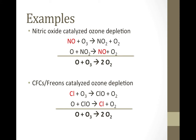At the top here is a two-step mechanism for nitric oxide catalyzed ozone depletion. Nitric oxide, shown in red, reacts with ozone to produce nitrogen dioxide and oxygen. The nitrogen dioxide, an intermediate in this process, reacts with free oxygen atoms to reform the nitric oxide molecule, along with more diatomic oxygen. Since nitric oxide was consumed in one step and produced again in a later step, and does not appear in the overall balanced equation, we see that it is a catalyst from this mechanism.